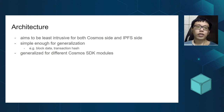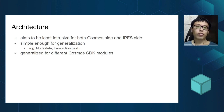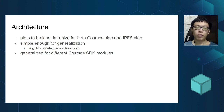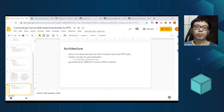This architecture is also simple enough for generalization. For example, if it's not for Cosmos module data but for block data or transaction hashes, we could easily implement that in the datastore part by querying the endpoints defined by Cosmos SDK itself. It's also generalized for different Cosmos SDK modules, so not just Likecoin chain but also other blockchain developers can use this method to make their data accessible through IPFS.